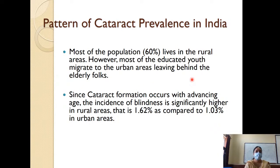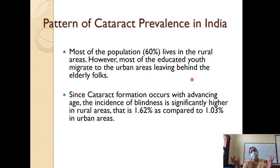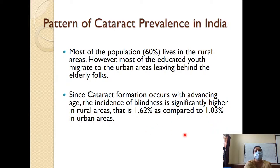If you look at the pattern of cataract prevalence in India, most of the population lives in rural areas, but educated youth migrate into urban areas, leaving elderly people behind. Most infective and environmental causes happen in rural areas. Lack of health facilities means preventable blindness from refractive errors also accumulates in rural India. Because there are more elderly people in rural areas, cataract is also more prevalent there - rural areas carry the most disease burden.